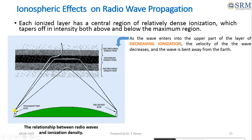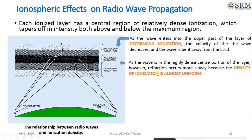When the radio wave from the transmitter enters the ionosphere at greater altitudes, the velocity of the wave decreases because the concentration of gas molecules is very low, and the radio wave is bent away from the earth. As the altitude decreases, the wave is in the highly dense center portion of the layer, and refraction occurs more slowly because the ionization density is almost uniform.